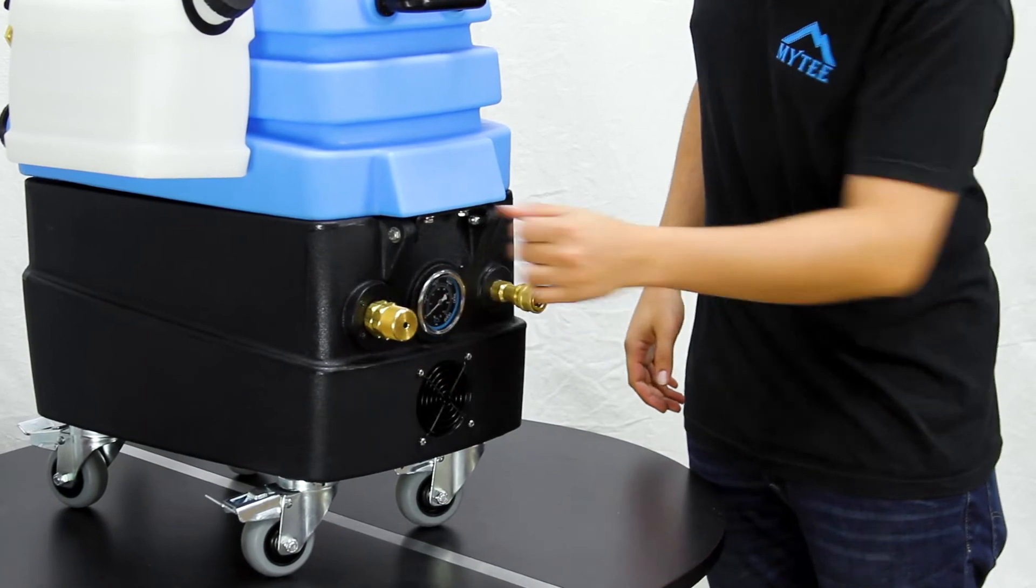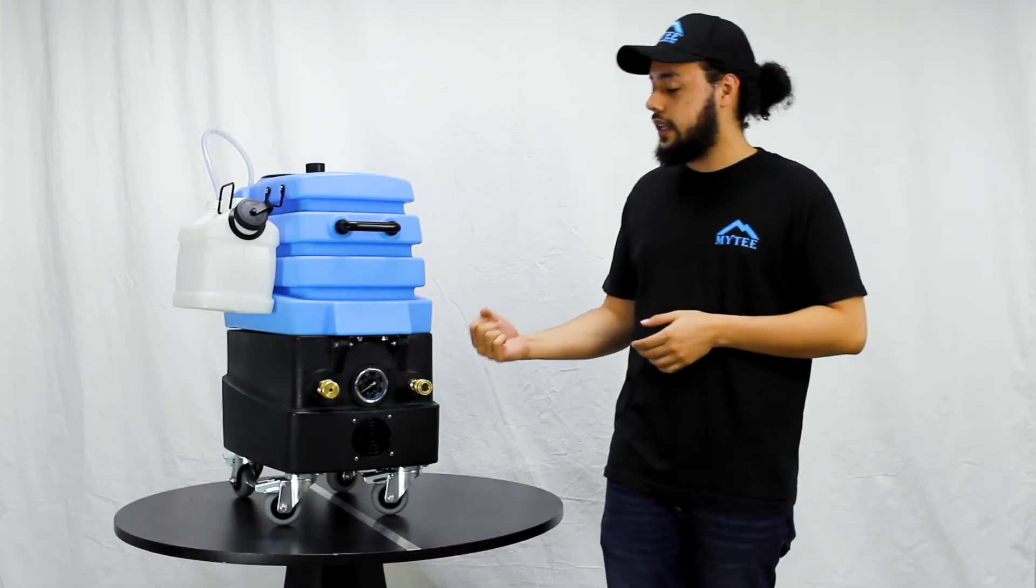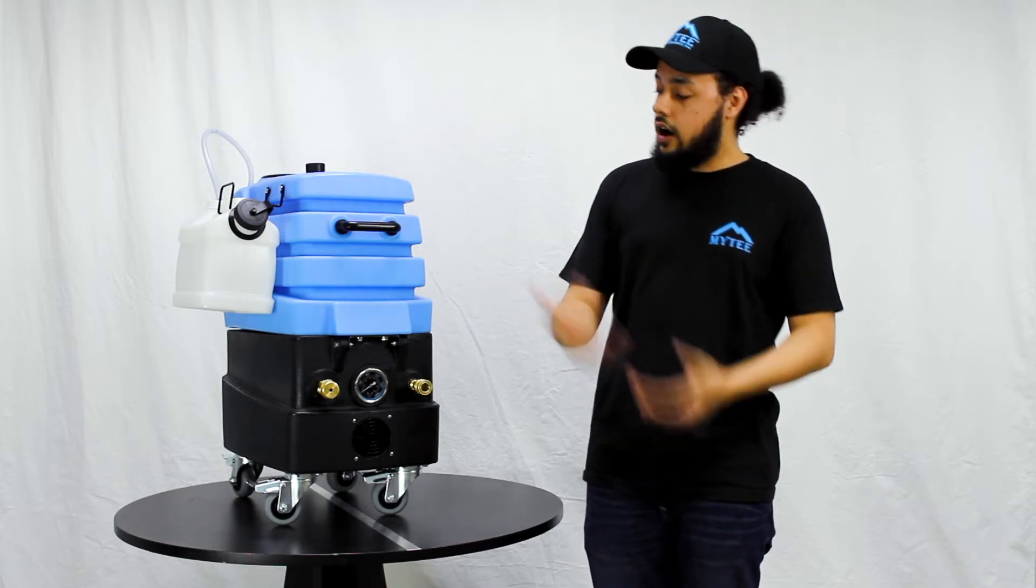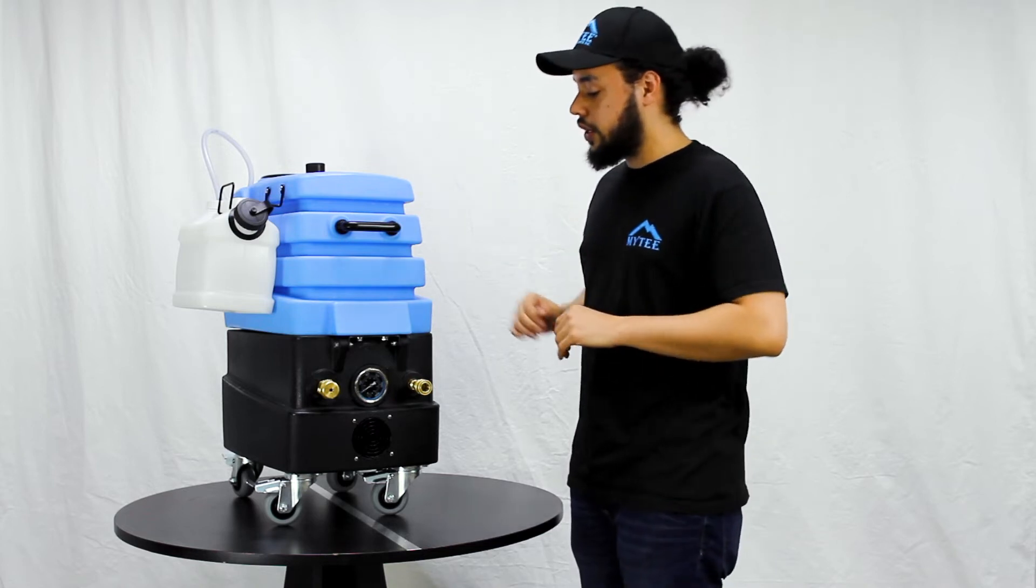On the other side right here, that is the pressure regulator knob. We're gonna use that to dial in the pressure from the max thousand psi all the way down to a couple hundred, depending on what you're cleaning, what the situation is.